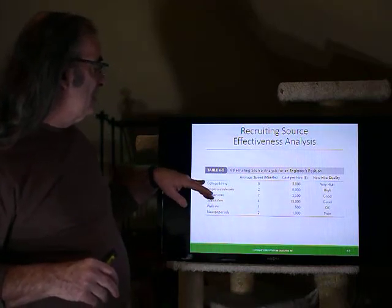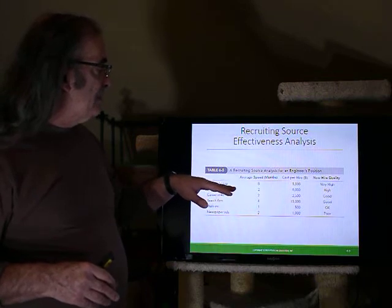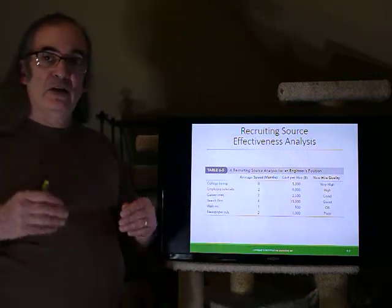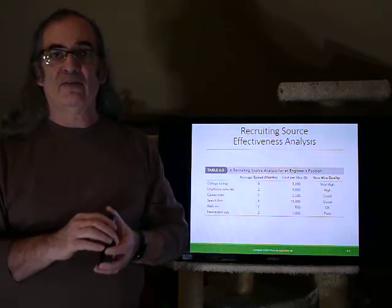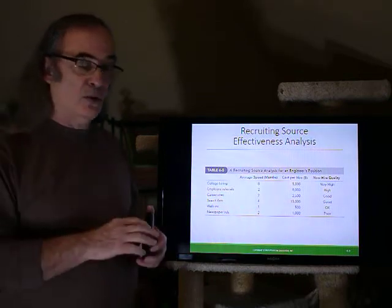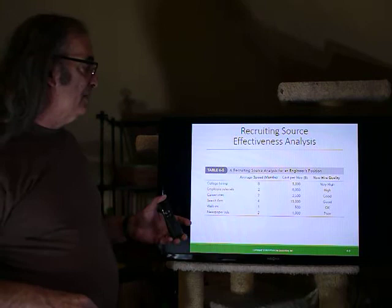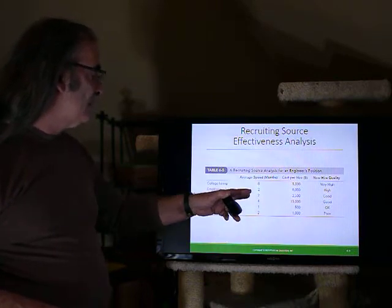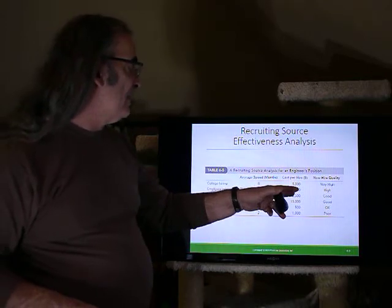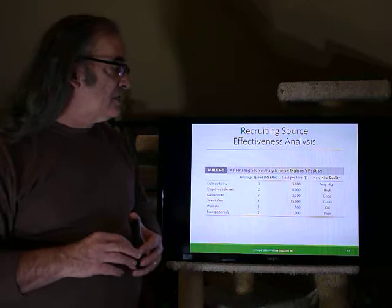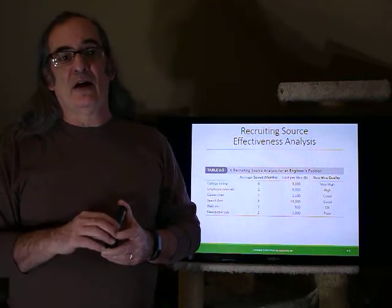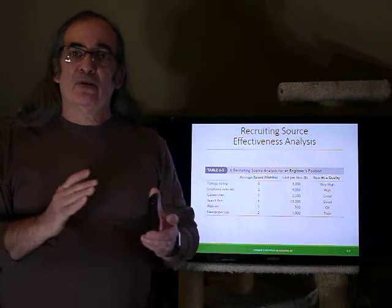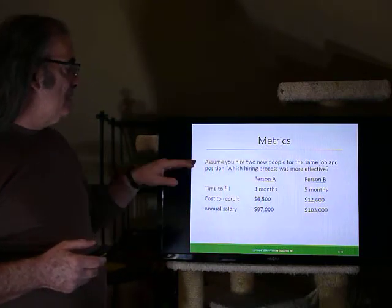Let's look at a recruiting source effectiveness analysis example from the textbook. We can look at average speed of recruitment, cost to hire, and new hire quality. Keeping records like this allows us to invest recruiting money where we get the most bang for our buck. College hiring was not quick — average speed of eight months, cost around $5,500 per hire, but new hire quality was very high. For a long-term talent philosophy focused on growing people, that's attractive. For short-term needs, search firms or career sites offer faster speed and lower cost — career sites around $2,500 — with good hire quality.